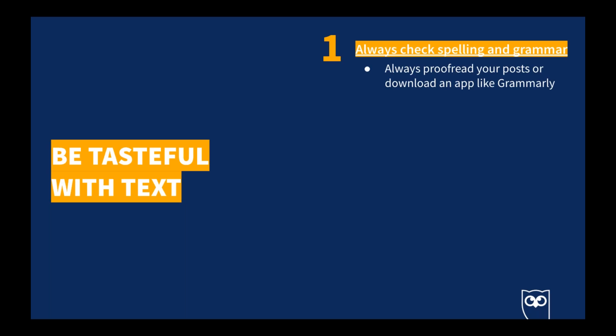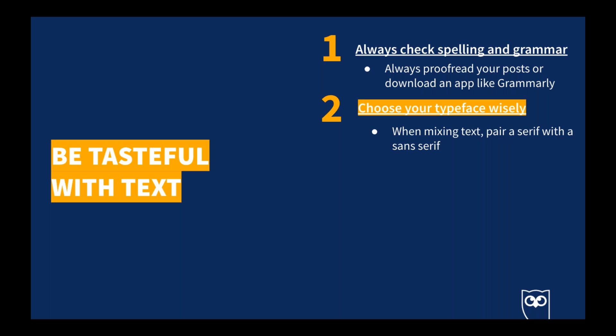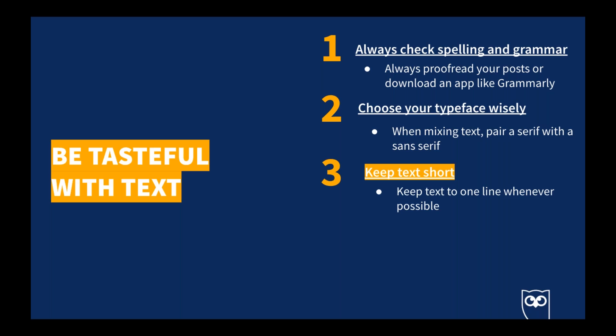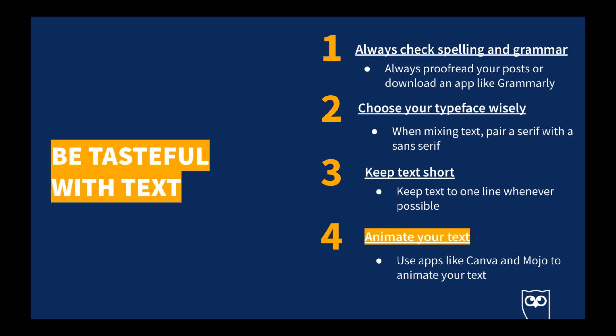Be tasteful with text — make sure it adds value and is bold, legible, straightforward, and concise. Ensure enough contrast between text and background so it's readable. Always check spelling and grammar — you don't want to be the brand that sends out a post with a spelling mistake. Always proofread or use an app like Grammarly. Choose your typeface wisely — pick something on-brand and easily legible. If you mix fonts, pair a serif with a sans-serif. Keep text short, on one line whenever possible, and watch out for orphan words that split text across two lines.